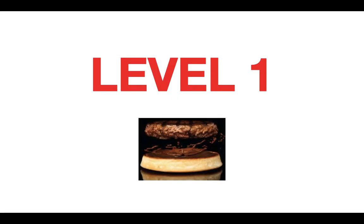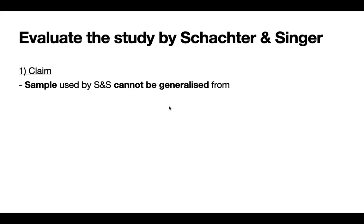Level one — we're starting with the basics, the bread and the meat. So let's say the question is: evaluate the study by Schachter and Singer. First, let's start with a claim. In my other videos I talk about the P-E-E-L method — that's just one method. This is a slightly different method you can choose to use. So if I'm going to start with a claim, I'm asked to evaluate — I'm going to discuss the strengths and weaknesses of the Schachter and Singer study.